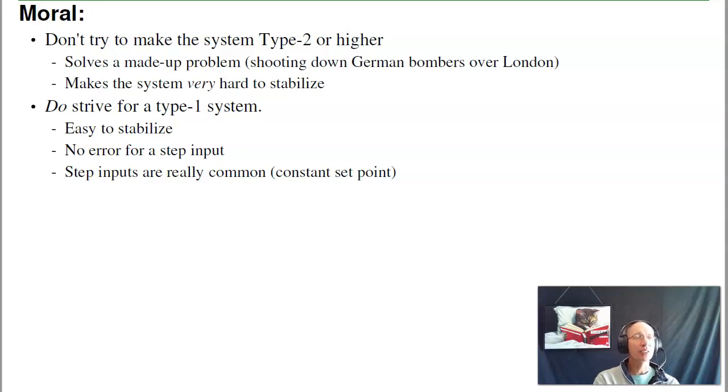Do strive, however, to make the system type 1. A single pole at s equals zero solves all sorts of problems. It can always track your constant set point. It's not that hard to stabilize. It tracks step inputs, which are really common, like a constant set point for temperature, water level, speed of a motor. Type 1 systems do make a lot of sense. So most systems you're going to run into are type 1. Or if they're not type 1, you can usually make them better by making them type 1. That's some of the things a control engineer does.